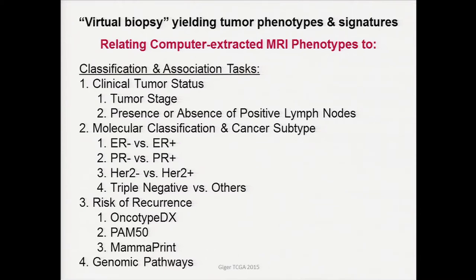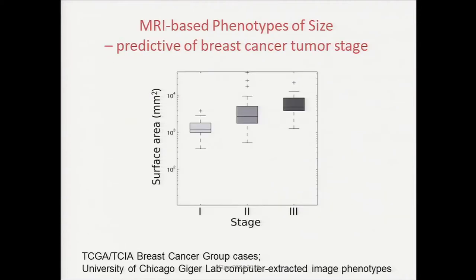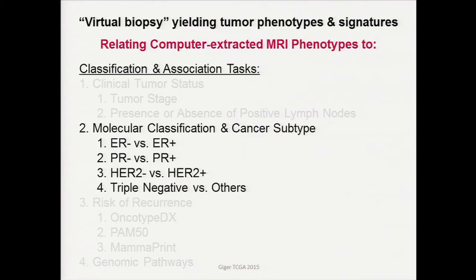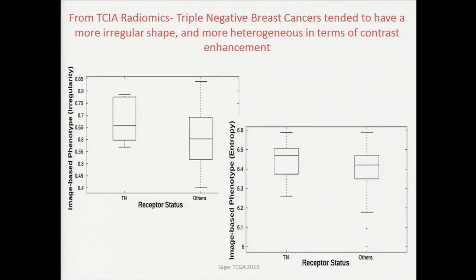In the TCIA breast group, we're relating these computer-extracted phenotypes to various tasks. For clinical tumor status, we show the surface area extracted by the computer relative to stage, and we see it is predictive of breast cancer tumor stage. We can look at it relative to molecular classification and cancer subtype. For example, on this limited dataset, ER-negative breast cancers tended to have larger size, a more irregular shape, and were more heterogeneous in terms of contrast enhancement. For triple-negative, they tended to have a more irregular shape and more heterogeneous contrast enhancement.